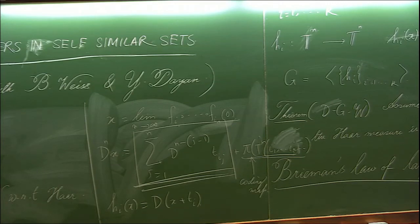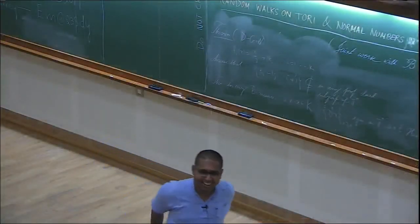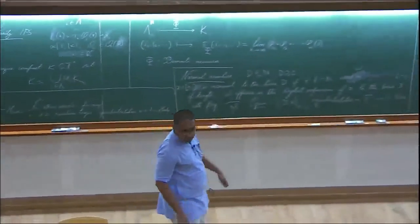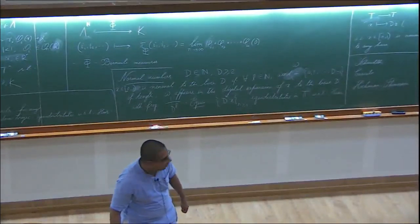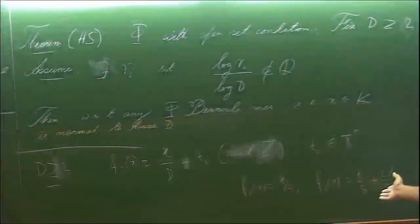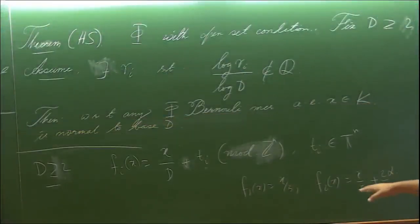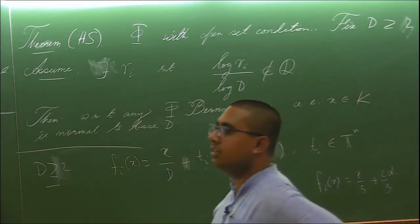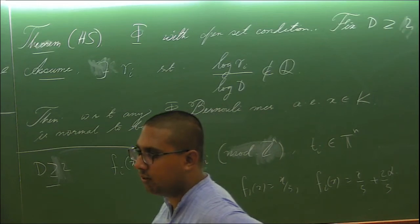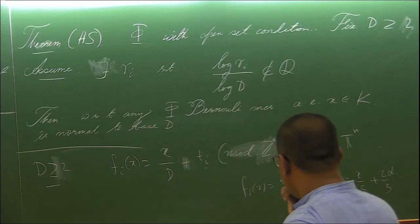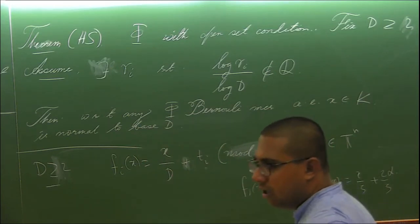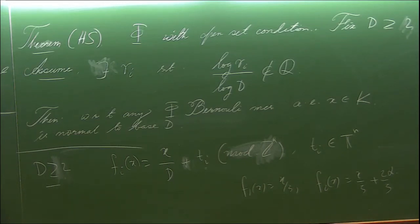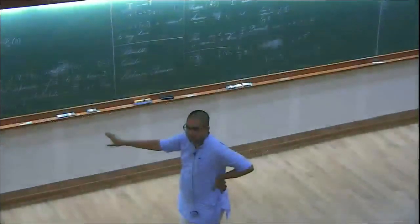Any questions or comments? Small amateur question. So these limit sets of this system, in this example where we have x over d plus Ti, these are just products of Cantor sets. So this is just the dilation of the Cantor set by the amount alpha. But in higher dimensions, it's just the product of a bunch of n Cantor sets, right? You can do it in each coordinate and then you just have the product set, right?